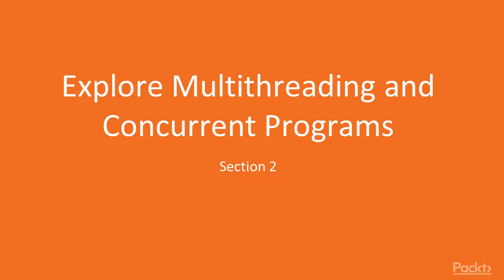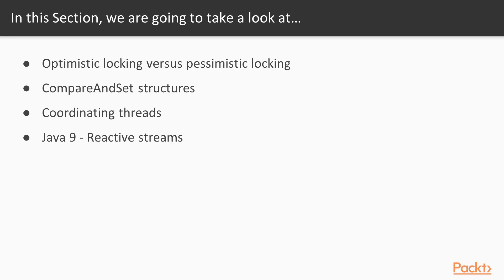This is the second section of writing high-performance Java applications in Java 9. In this section we'll be using constructs from the Java 9 java.util.concurrent package to create efficient multi-threaded and concurrent programs. We will be looking at optimistic locking versus pessimistic locking, compare-and-set structures from the Java API, coordinating threads, and the Java 9 new feature: reactive streams.